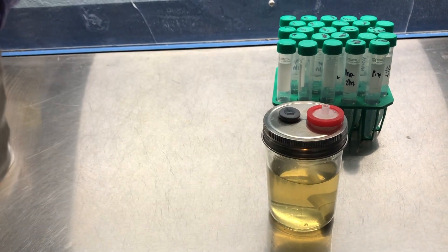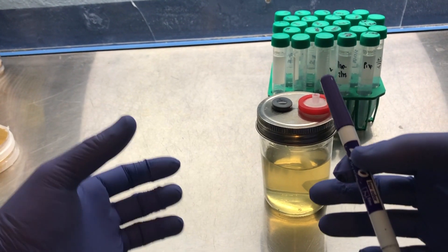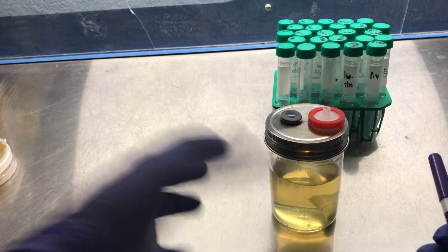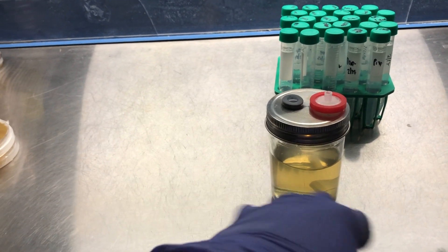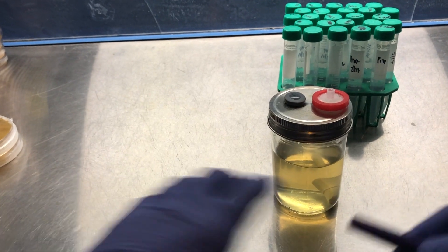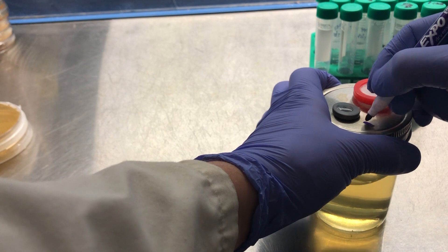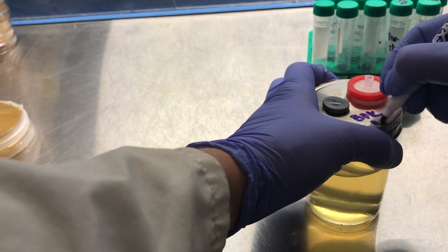And as that stir bar spins on the stir plate, those germinated spores will interact with each other and hopefully they'll create some new strains, some new genotypes. Then we'll put that into grain and then grow it out till fruiting. We can go ahead and label with the strain and date.